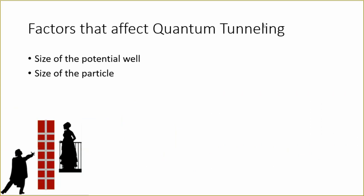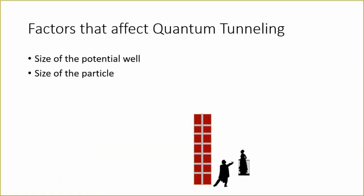So here we have factors that affect quantum tunneling. There are two main factors that will affect quantum tunneling, which are the size of the potential well and the size of the particle. So here we have this small skit on the bottom displaying Romeo and Juliet, with Romeo being too large to pass through the wall. But if he gets smaller, then he will be able to pass through.